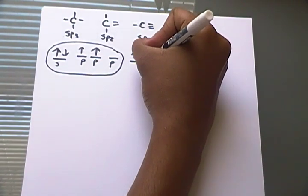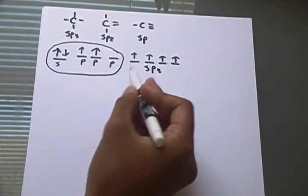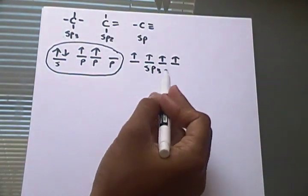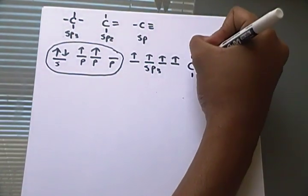That's it for SP3 right there. Three P orbitals, one S orbital. Hence, SP3. That's basically it, for SP3 at least.